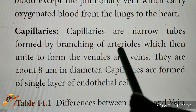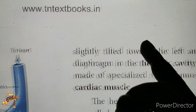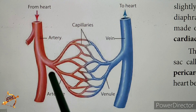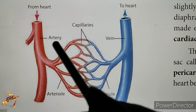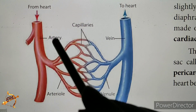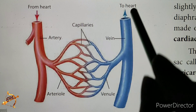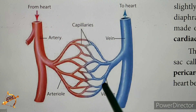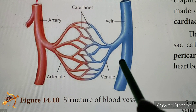Capillaries are narrow tubes formed by branching of arterioles, which then unite to form venules and veins. Looking at the diagram: from the heart, blood travels through arteries, branches into capillaries, and returns to the heart through veins. This is the structure of the blood vessel network.